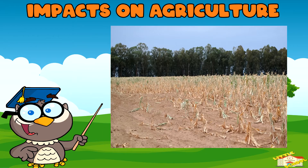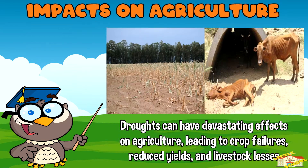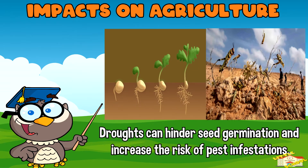Impacts on agriculture. Droughts can have devastating effects on agriculture, leading to crop failures, reduced yields, and livestock losses. Droughts can also hinder seed germination and increase the risk of pest infestation.